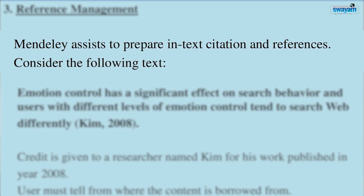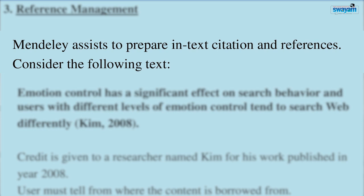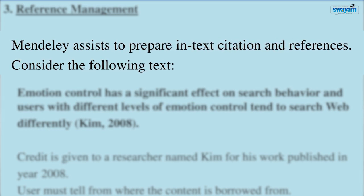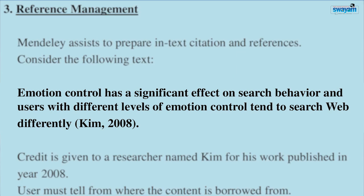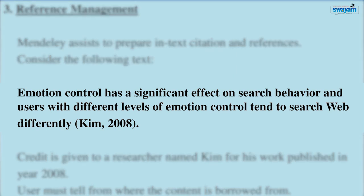Let me explain what an in-text citation is using an example. Consider the text: 'Emotion control has a significant effect on search behavior, and users with different levels of emotion control tend to search the web differently' — followed by the author's last name Kim and year 2008 in brackets.